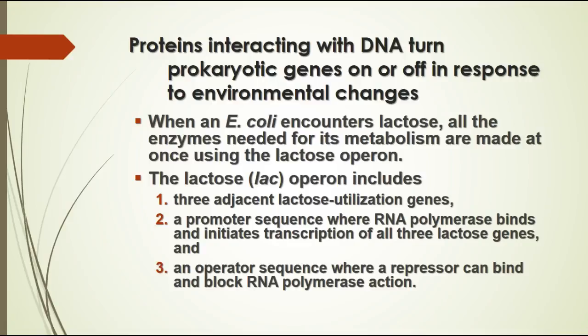When E. coli encounters lactose, it has all the enzymes present in the bacterial genome and they're made all at one time using the lac operon. The lac operon includes three genes involved in utilizing lactose. There's a promoter sequence where RNA polymerase binds to start transcription, and there's an operator sequence where a repressor can bind to block the RNA polymerase.